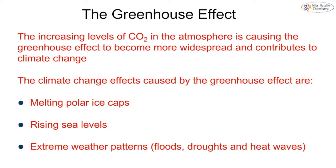The main effects of climate change you need to be able to state are: polar ice caps melting, which causes rising sea levels, which in turn can cause extreme weather patterns such as floods, droughts, and heat waves. The overall temperature of the Earth is heating up, though it could also cause drastically colder winters. This affects many different species, plants, and animals, so we want to limit as much carbon dioxide entering the atmosphere as possible.